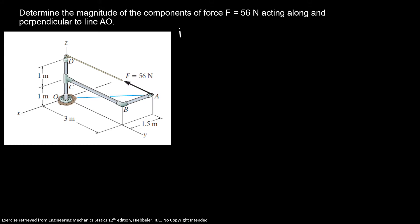The first step is we're going to find the unit vector of the line that the problem is asking. So first, I'm going to find my position vector AO that is equal to 0 minus negative 1.5 I plus 0 minus 3 J plus 0 minus 1 K. So here, my position vector is equal 1.5 I minus 3 J minus 1 K.